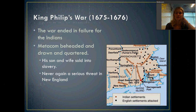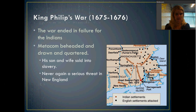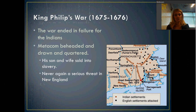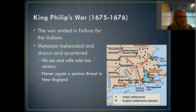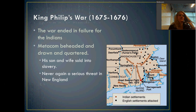After Metacom is killed, his wife and son are sold into slavery. This is really the last serious threat to New England — he was almost successful. After this, there will be conflicts on the outskirts and some attacks by natives on white settlements and vice versa, but really after this point they don't stand much of a chance. The white settlers are just far better armed and better coordinated, and it's a big issue for the natives.